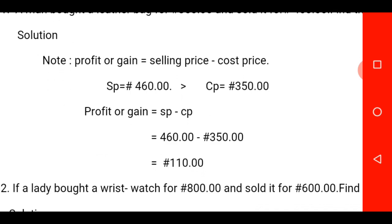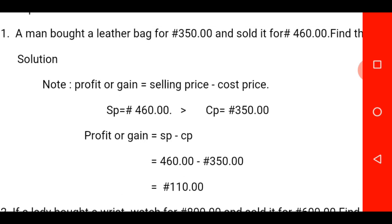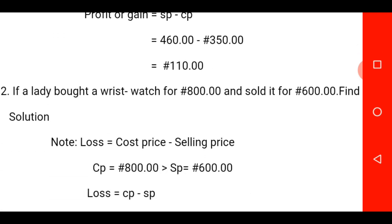What is our SP? Our SP is 416 naira minus 350 naira. If you calculate that fairly well, you will discover that your answer is going to be 110 naira. That is the solution for the first one. Let us now quickly move to the second one.